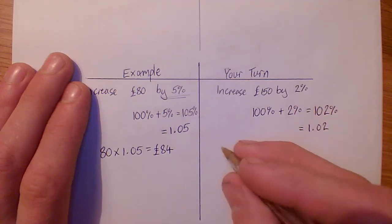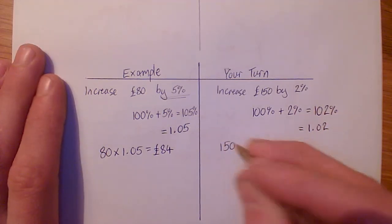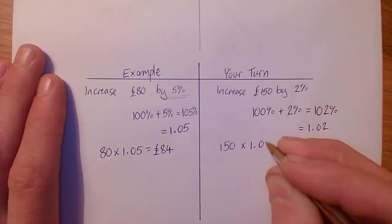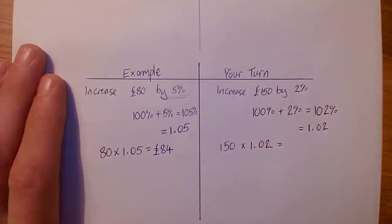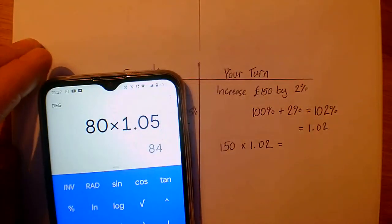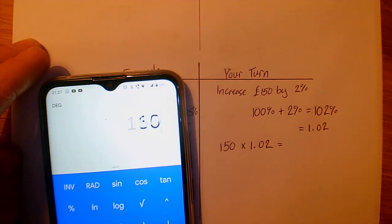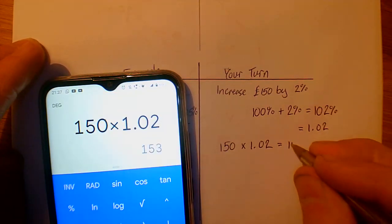Once you've got that number, you can do 150 times 1.02. Well, again, bring in our calculator. 150 times 1.02, and we get 153 pounds.